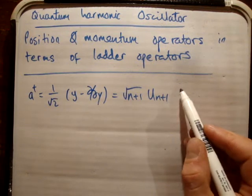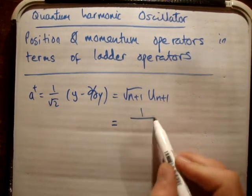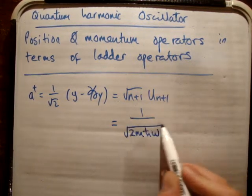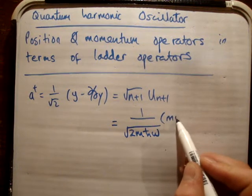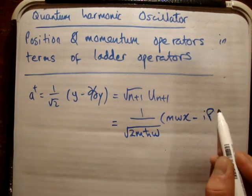Or another way of writing it, and I've done this in another video, is the following. And this is probably the most helpful way: 1 over root 2MℏΩ times M omega X minus IP.